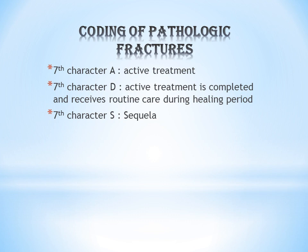In the case of pathologic fracture, the seventh character A stands for active treatment — not the initial encounter, but active treatment. Whether the patient comes for the first, second, or third time, if the treatment is in the active treatment phase, assign the seventh character A. Seventh character D should be given once active treatment is completed and the patient is receiving routine care during the healing period, such as cast change or medication adjustment.